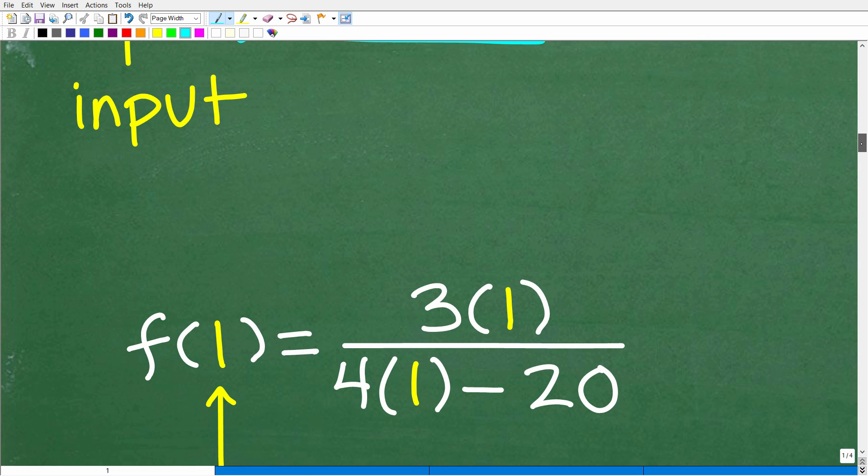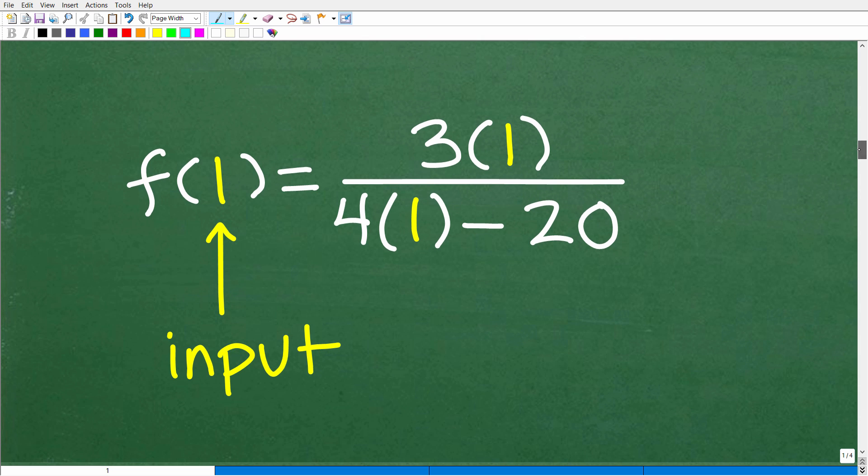Okay, so let's go ahead and do that right now. So f of 1 would be equal to the following. Okay, so remember these were x's. So here was our x. This was an x, and this was an x. So we're going to replace all these x's with 1. And any time you're evaluating a function, always use parentheses to replace your value. So this is going to be 3 times 1 over 4 times 1 minus 20.